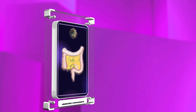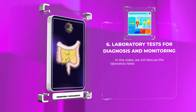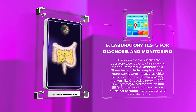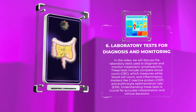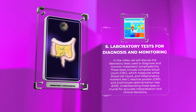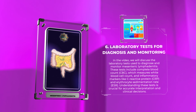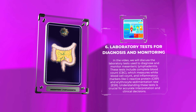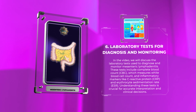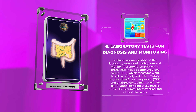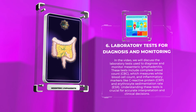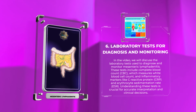We will discuss the laboratory tests used to diagnose and monitor mesenteric lymphadenitis. These tests include complete blood count (CBC), which measures white blood cell count, and inflammatory markers like C-reactive protein (CRP) and erythrocyte sedimentation rate (ESR). Understanding these tests is crucial for accurate interpretation and clinical decisions.